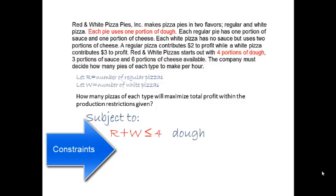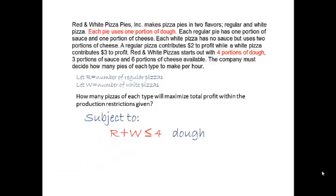Look at dough. A regular pizza uses one portion of dough per pie, or one R. Also, one portion of dough per white pizza, or one W. All the dough used by R regular pizzas and W white pizzas will be R + W. All the dough used making pizzas is limited to the four portions available. So the constraint equation for dough is an inequality: R + W, the dough used, must be less than or equal to four, the dough available.